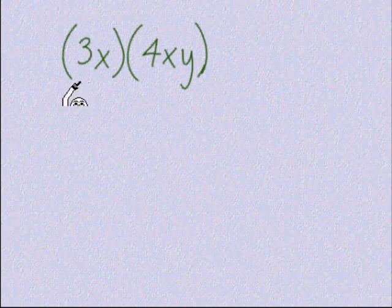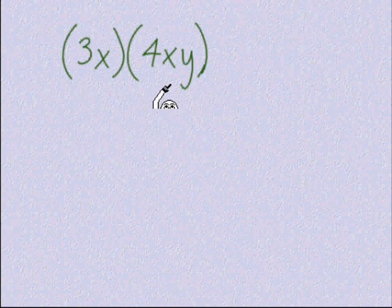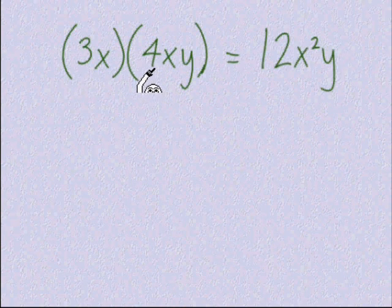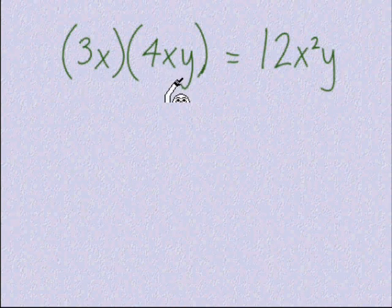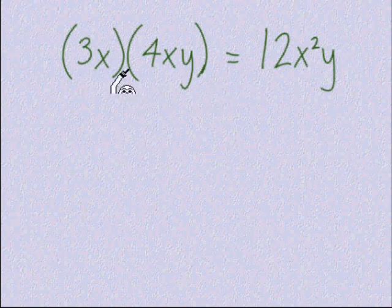We want to notice that we have one term here and one term here. When we multiply monomials, we look at the coefficients and multiply those together. Then we look at the variables and see if we have any we can combine. The two x's become x squared, and this y did not have another y, so we just bring this one y along with our answer.